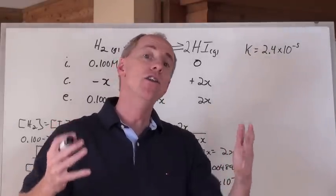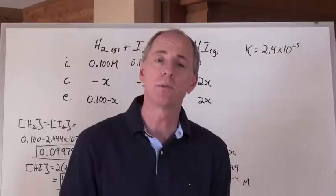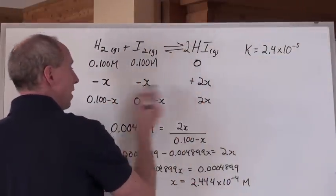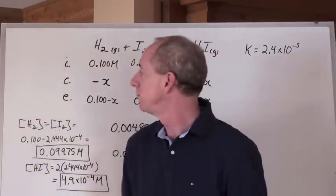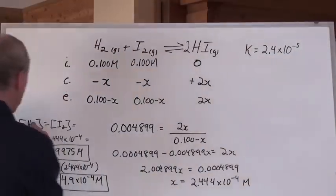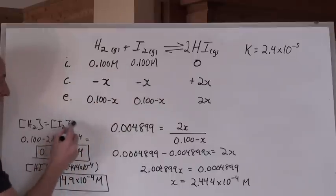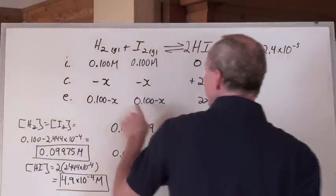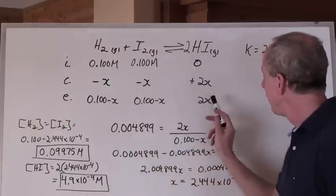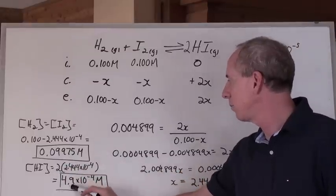That is not the answer to anything because you're asked in a question like that to calculate the equilibrium concentrations. Just finding x, well, as a matter of fact, x isn't an equilibrium concentration for anything. So go back and write down, if x equals this, then the concentration of H2, which is the concentration of the I2, is going to be equal to 0.1 minus x, so it's going to be 0.1 minus whatever that x value is there to get that, and the HI is 2 times x, so it's 2 times that number to get to that.